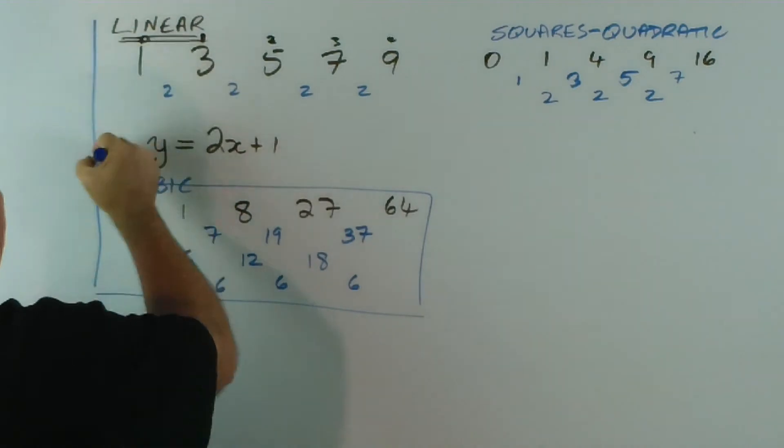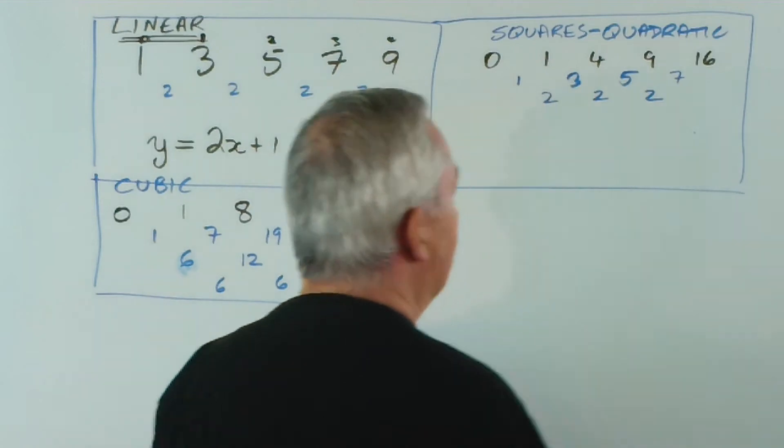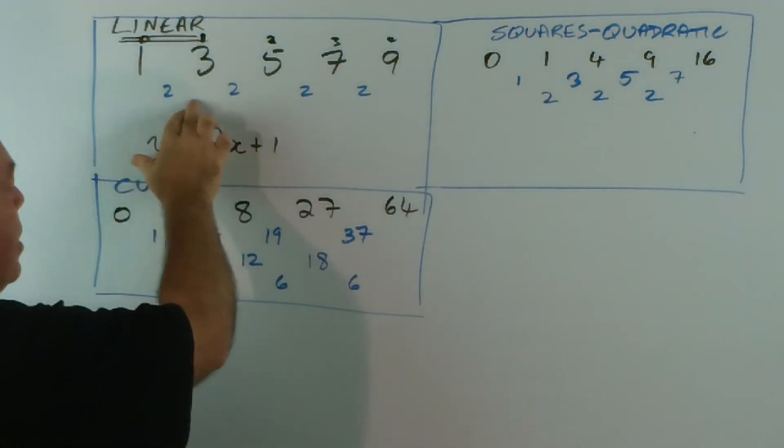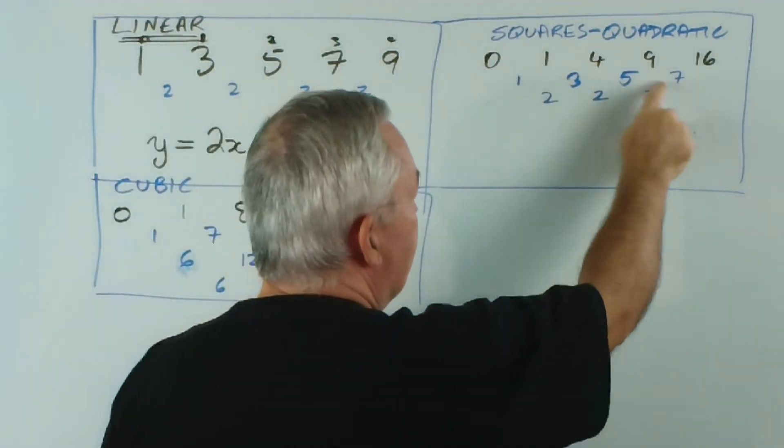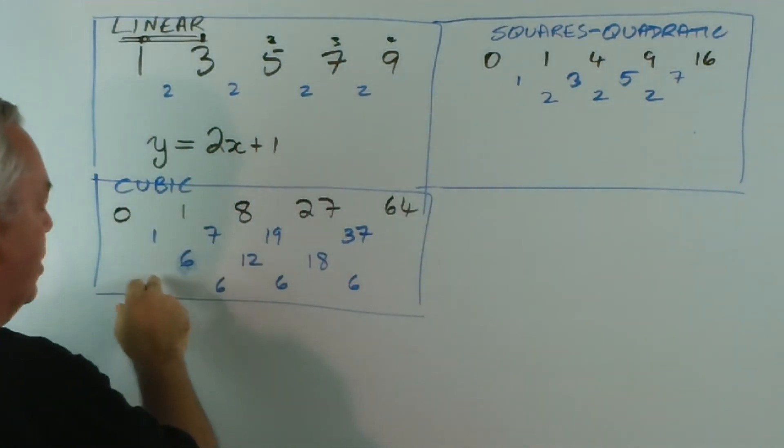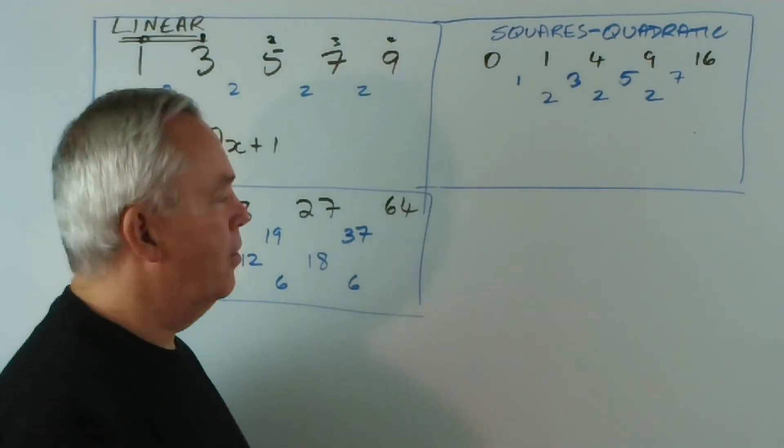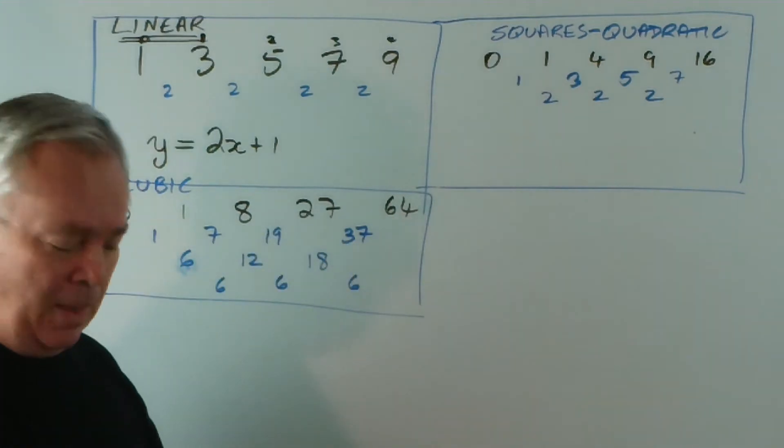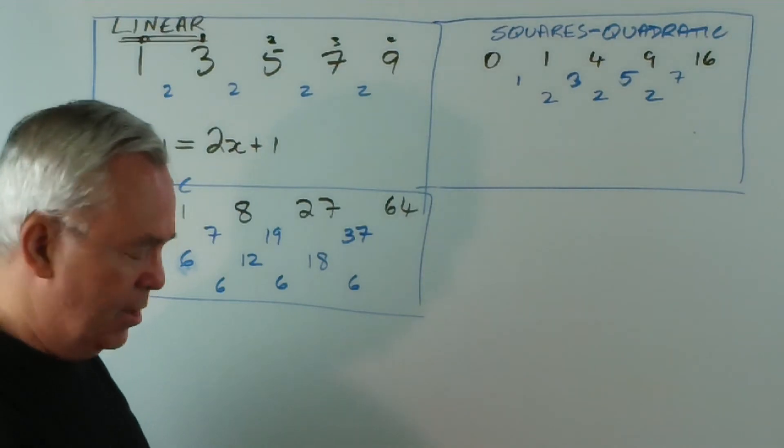And this pattern would repeat. And these are cubics, cubic equations. So, just segmenting them, linear equations have a consistent pattern on the first line of differences. Quadratic equations have a consistent line on the second line. Cubics have a consistent lot of differences on the third line. Quartics or fourth powers on the fourth line and so forth. This is consistent. And every single polynomial subscribes to this.